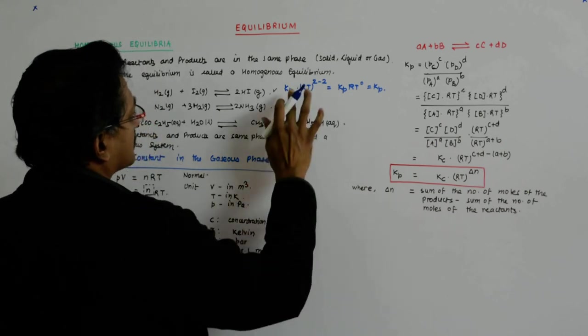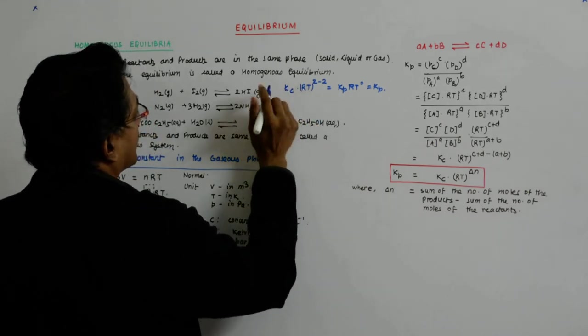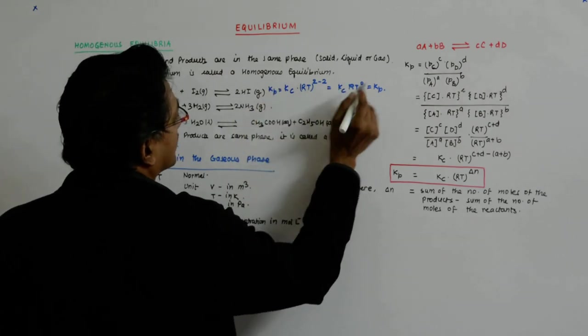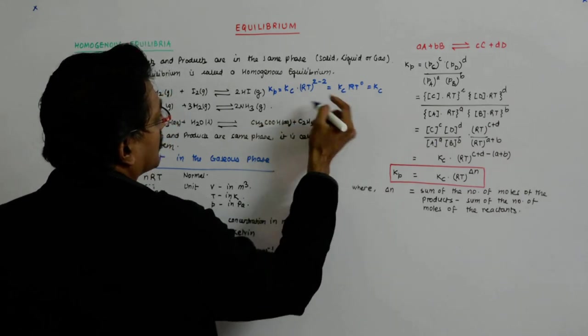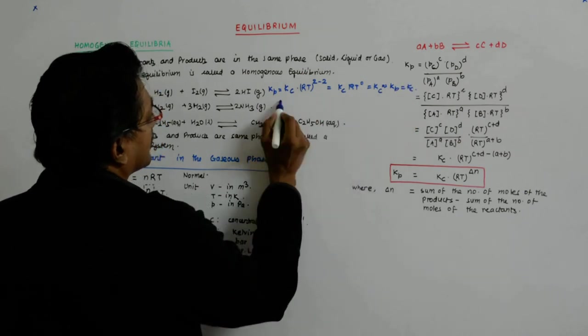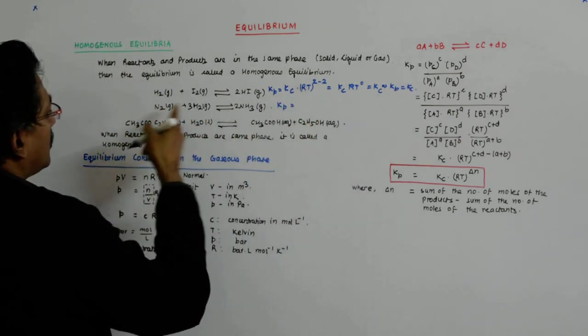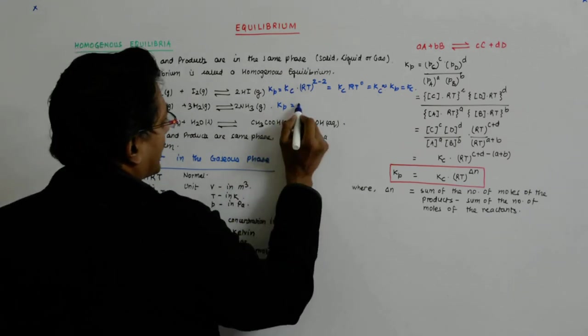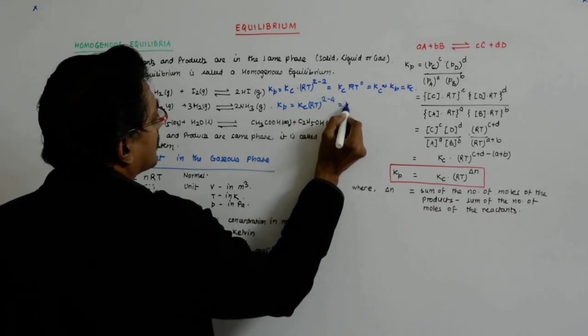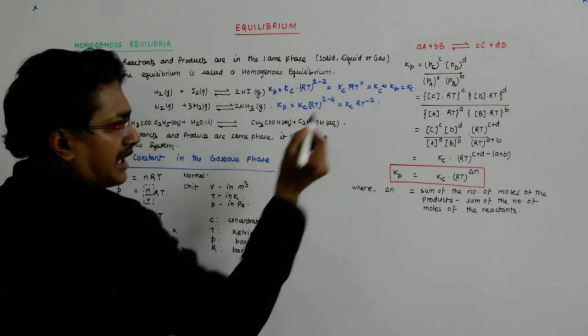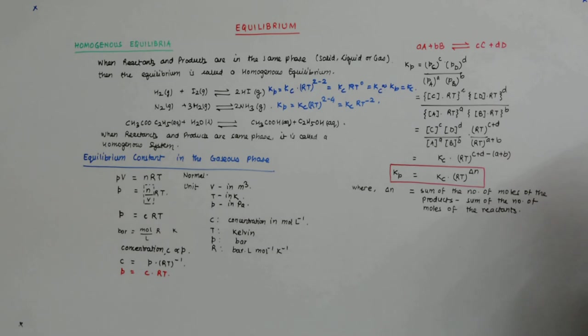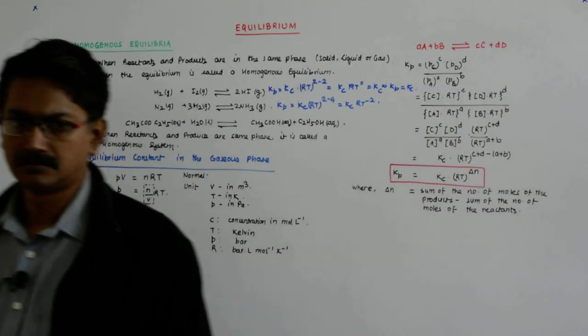I am sorry. Kp is equal to this. So it implies that for the ammonia synthesis, Kp is equal to Kc times RT to the power 2 minus 4, which is equal to Kc times RT to the power minus 2. And that is what we had got. Simple.